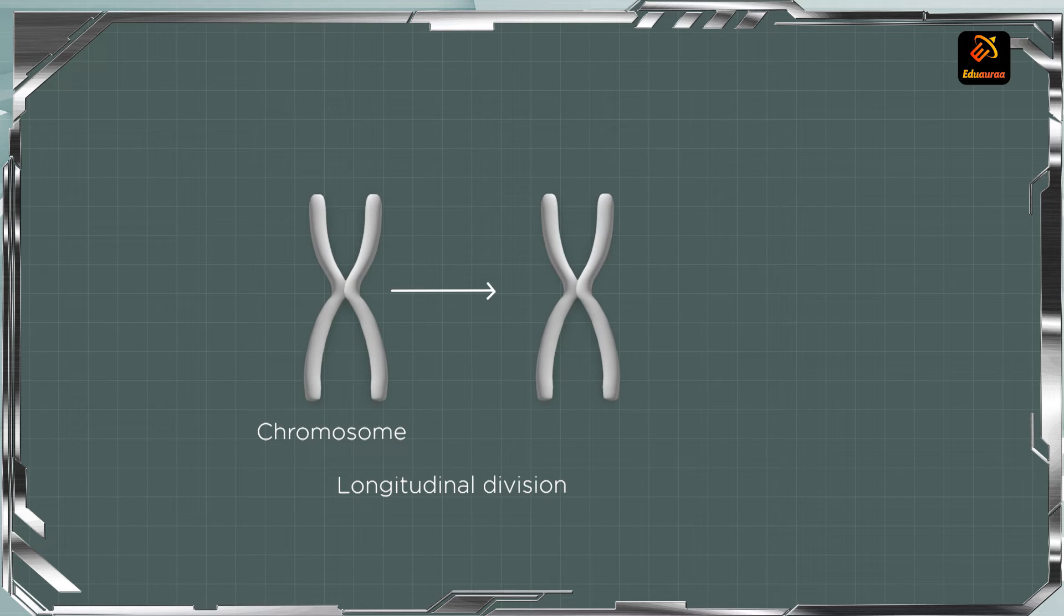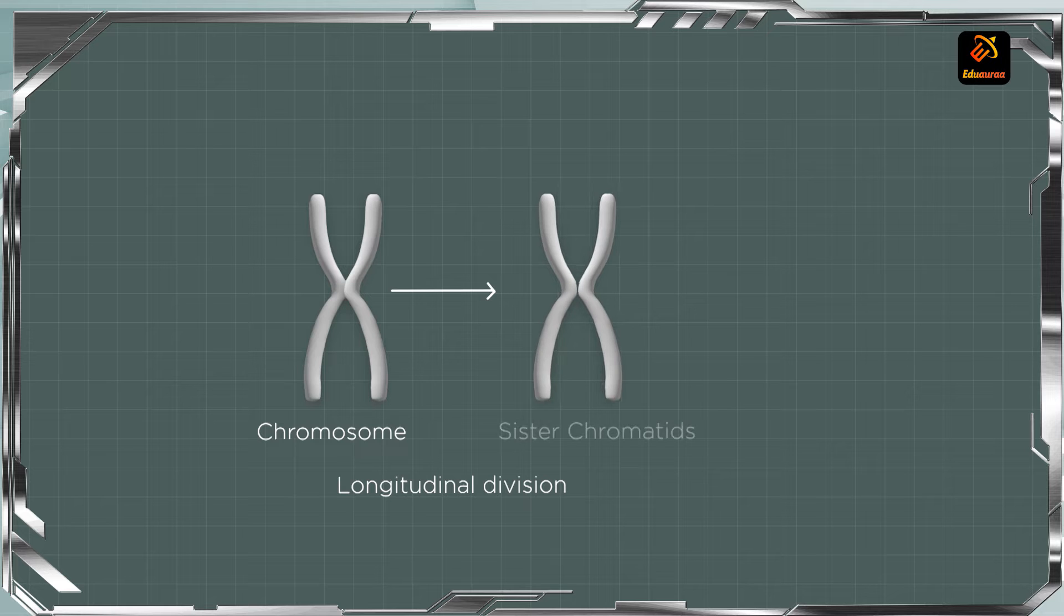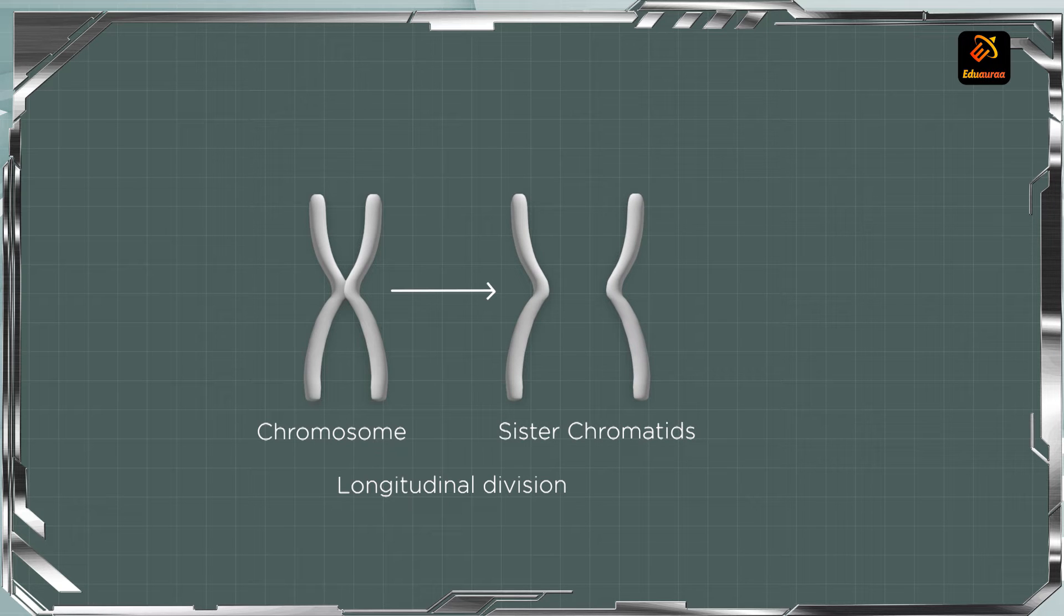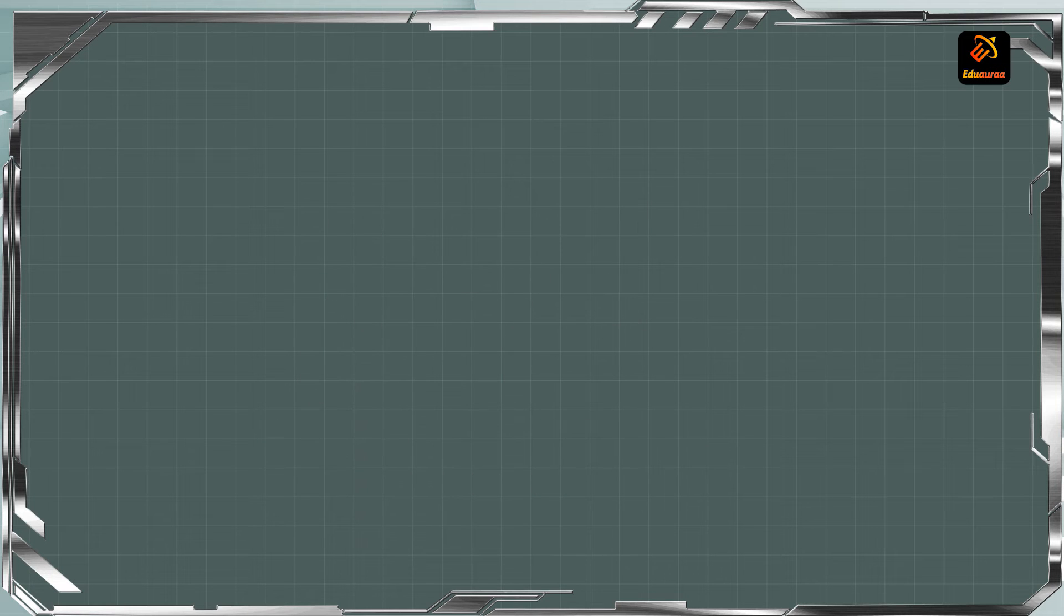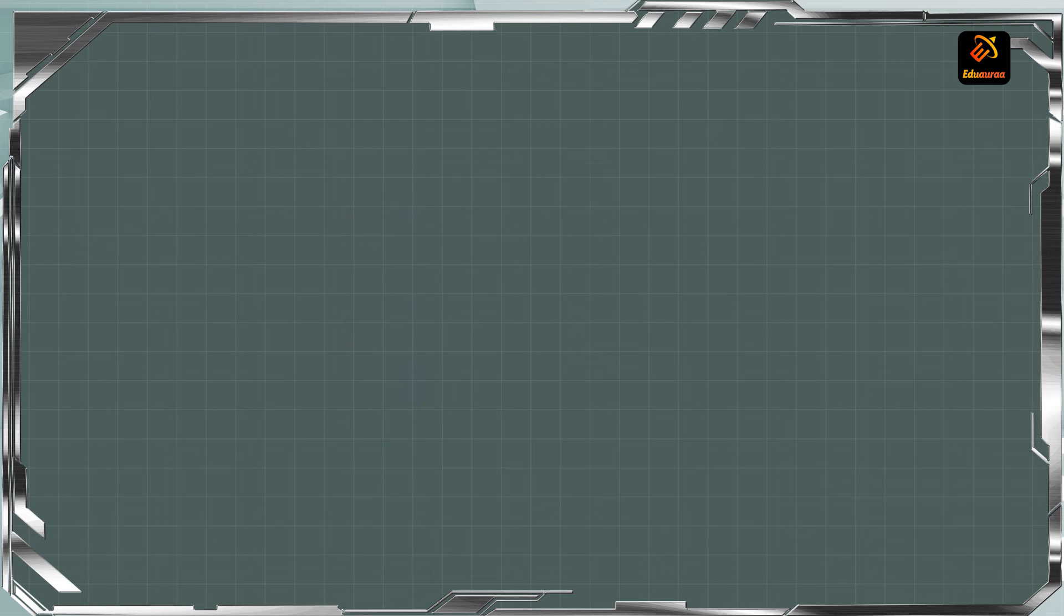We need to understand, longitudinal splitting or division of each chromosome into two sister chromatids is another feature of prophase. If I draw any chromosome, it will have two sister chromatids. Both the sister chromatids are joined at a point and that point is called as centromere or even it is kinetochore or primary constriction.